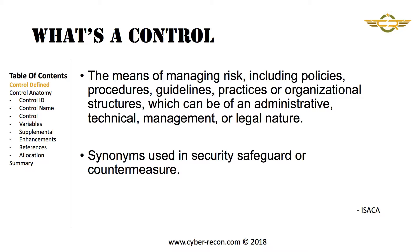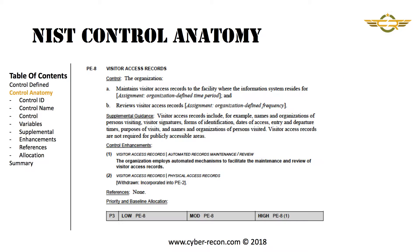Synonyms for a control are security safeguard or security countermeasure. In this example, we'll be looking at the NIST control PE-8, which is Visitor Access Records, and it's representative of many of the controls in the NIST control library, or 853.